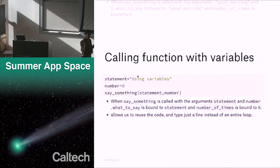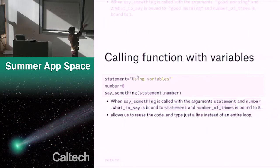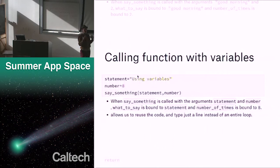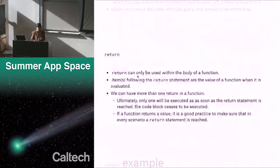We can call a function with variables, and those variables can have totally different names than the parameters. Our parameters were what_to_say and number_of_times, but here I'm making a variable called 'statement' and a variable called 'number', then calling say_something with statement and number as arguments. What_to_say is bound to statement and number_of_times is bound to eight. This allows us to reuse code and type just one line instead of an entire loop, and if you've debugged your function and know it's working correctly, you can use it anywhere without introducing a new typo or error.